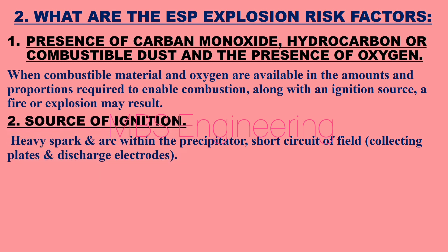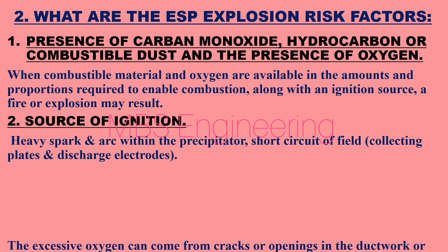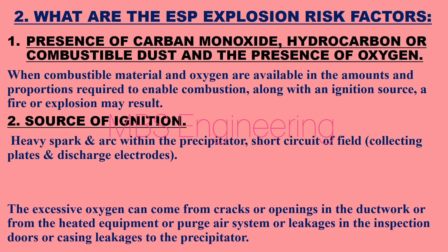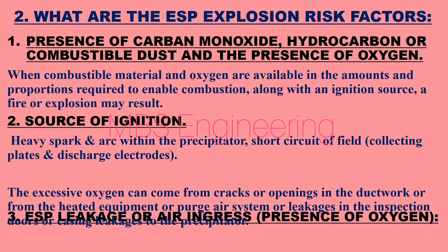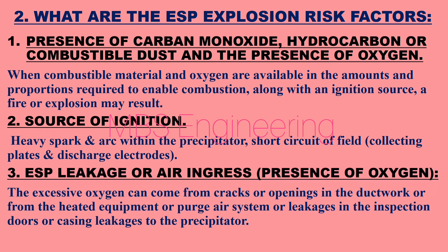Risk Factor 2: Source of ignition — heavy sparks and arcing within the precipitator, and short circuits between collecting plates and discharge electrodes. Risk Factor 3: ESP leakage or air ingress — presence of oxygen. Excessive oxygen can come from cracks or openings in the ductwork, from heated equipment, the purge air system, or openings in the inspection doors or casing leakages to the precipitator.